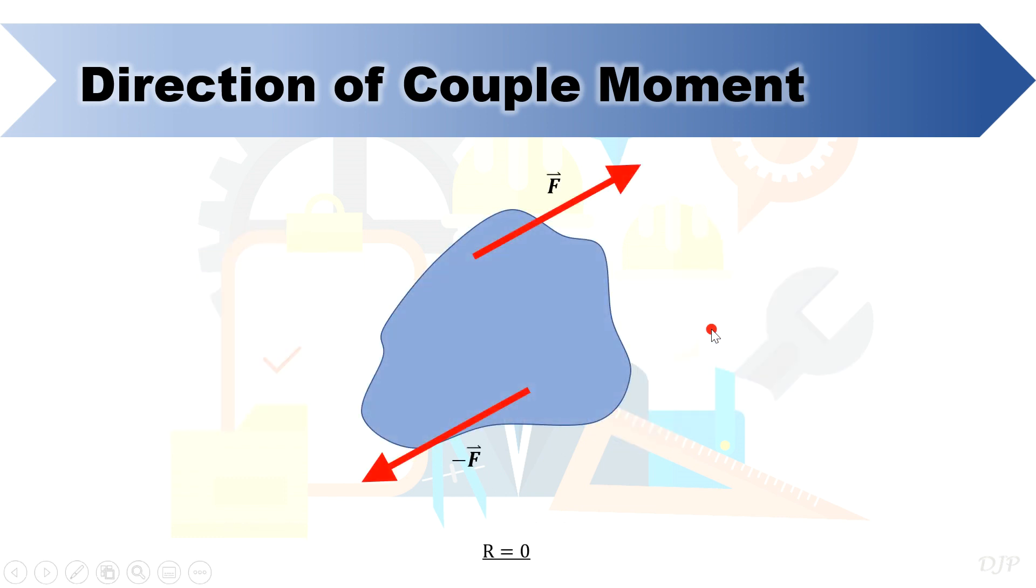Another example is this body acted by inclined forces that can form a couple. Again, for a couple, the resultant force is zero.